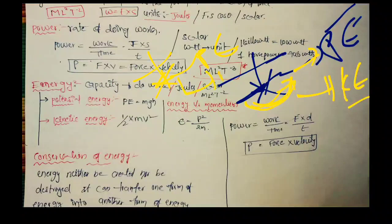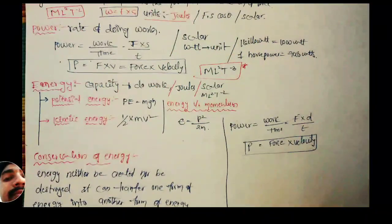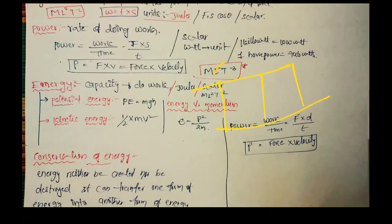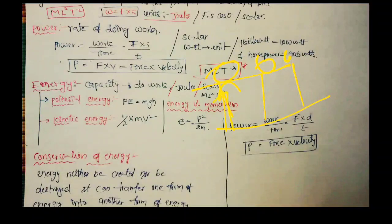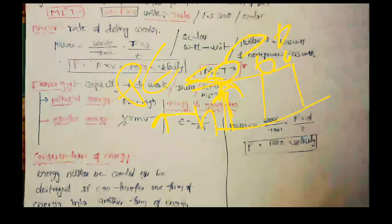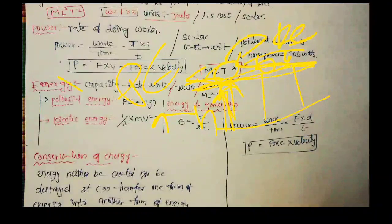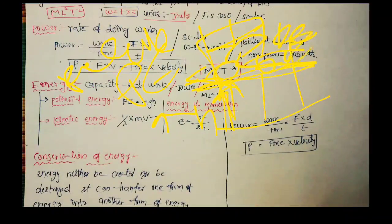Potential energy and kinetic energy together make mechanical energy. Take a bridge as an example — vehicles on the bridge are at some height, so they have potential energy. They also have some velocity, so they have kinetic energy. This is the combination of potential energy and kinetic energy.